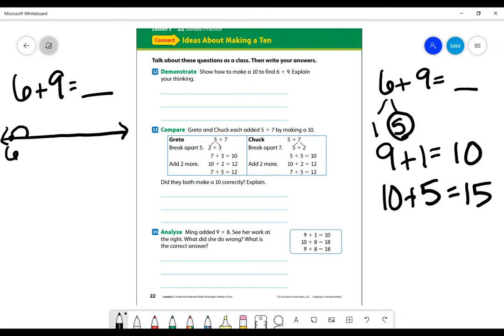So 6, 7, 8, 9, 10, 11, 12, 13, 14, 15. And I'm going to double check to make sure I had 9. So 1, 2, 3, 4, 5, 6, 7, 8, 9.